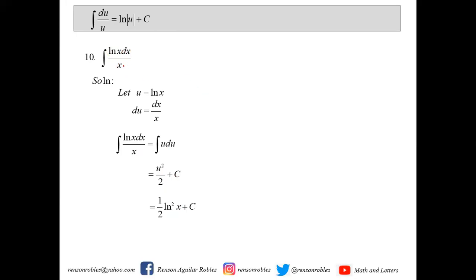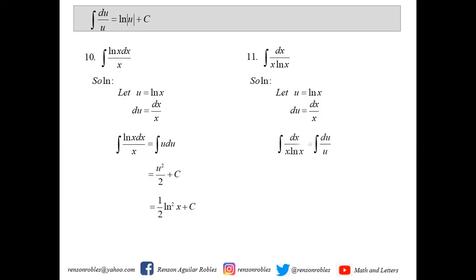What if ln(x) is in the denominator? We have the integral of dx over x·ln(x). Let u equal ln(x) and du equals dx over x. By change of variable, dx over x is our du and ln(x) is our u, giving the integral of du over u. That equals ln(u) plus c, and writing back: ln(ln x) plus c.